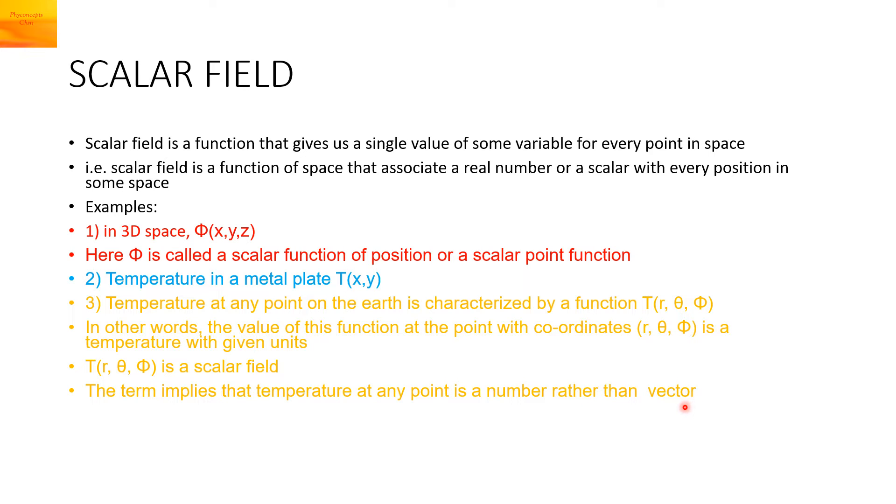That is, it does not have any direction, only magnitude. Another example is about a function Phi which depends upon X, Y, Z. It is given as X cube Y minus Z square. This is an example of a scalar field.